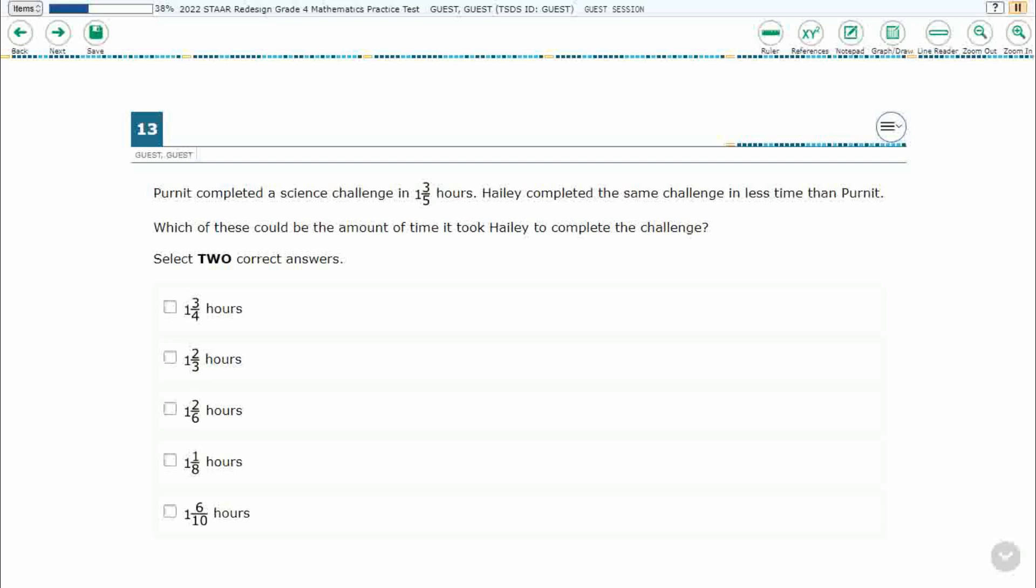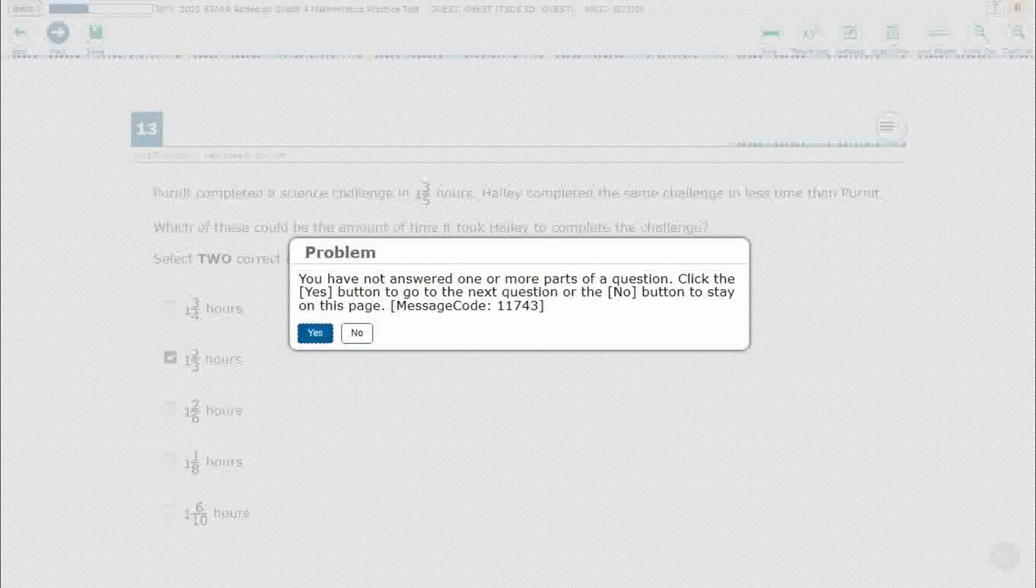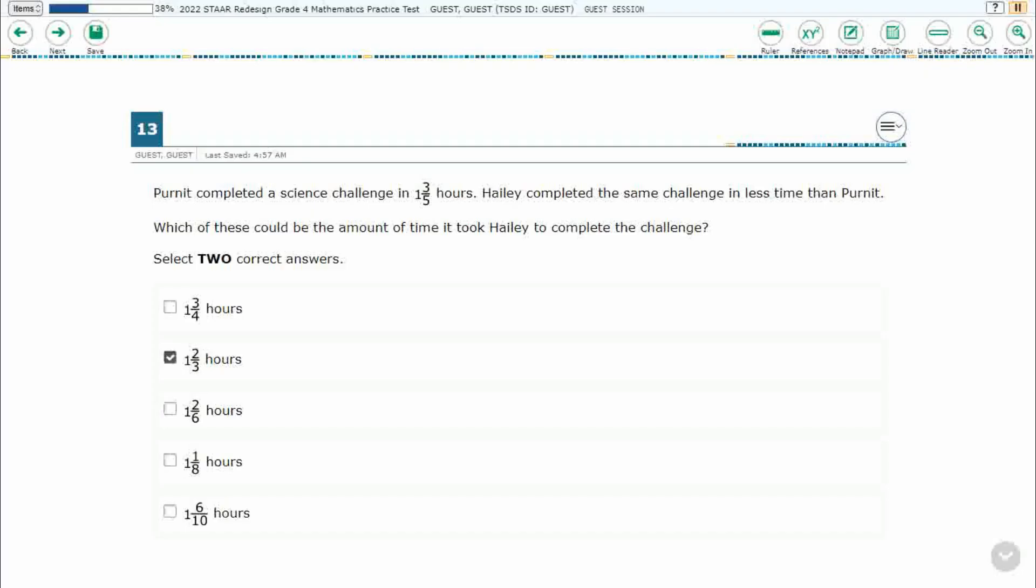So this is multiple select so you see here that we need two correct answers so they could be any two. Watch what happens if I selected these two and I try to get that third. You see it's thinking about it but it's not going to let me select three so it's impossible to select three answers. And watch what happens if I try to go to the next problem with just one selected. It's going to have an error message saying you have not completed this problem. So there are some nice built-in features here.